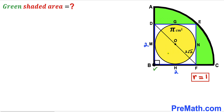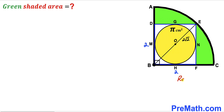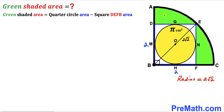Now I'll connect center B with point E. Observing square DEFB, both DF and BE are diagonals. Since diagonal DF is 2√2, diagonal BE is also 2√2. Importantly, diagonal BE is also the radius of the quarter circle, so the radius of the quarter circle turns out to be 2√2.